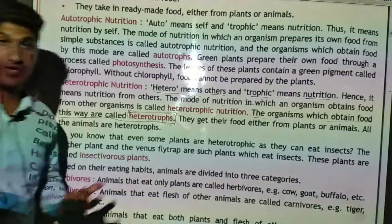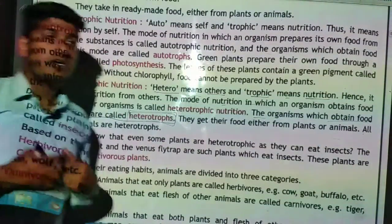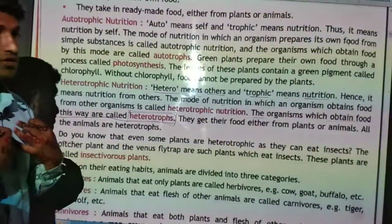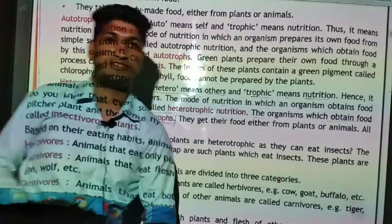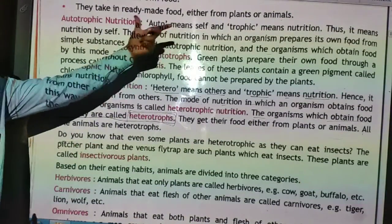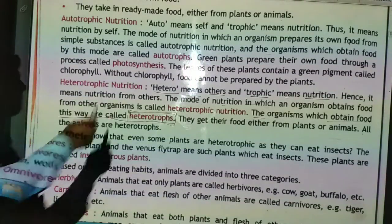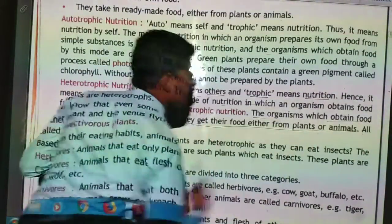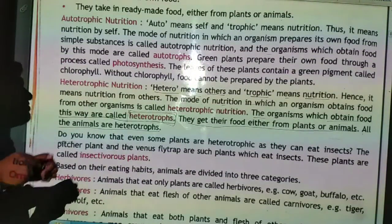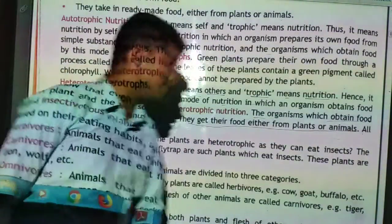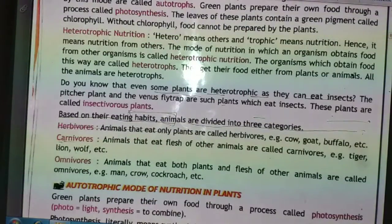For example, we humans are heterotrophs because we do not prepare our own food — we get food from plants and animals. All animals are heterotrophs, as they get their food either from plants or animals.